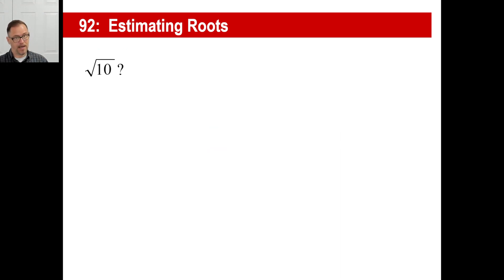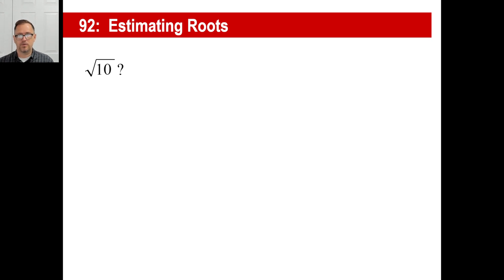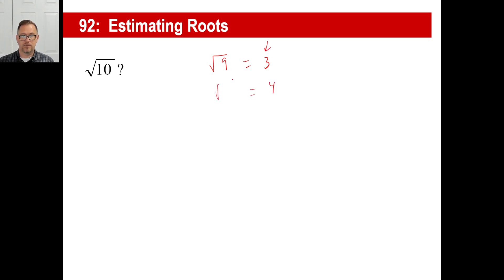Now let's look at this: the square root of 10. We know the square root of 9 is 3, the square root of 4 is 2, the square root of 16 is 4, and so on. We can make a guess. If we know the square root of 9 is 3, and 3 times 3 is 9, the next number we'd try is 4 times 4 — the square root of 16 is 4.